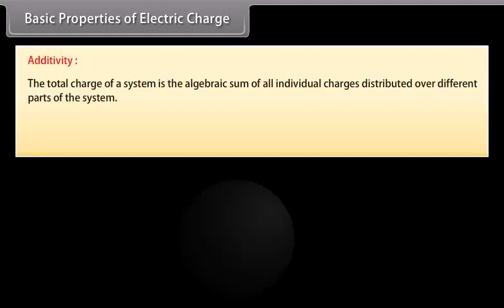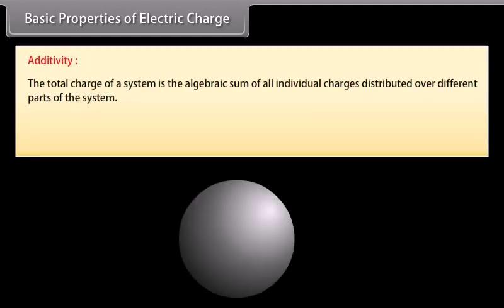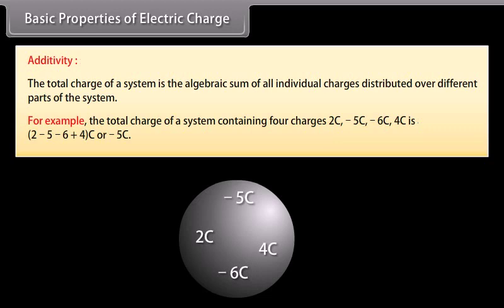Basic properties of electric charge — Additivity: the total charge of a system is the algebraic sum of all individual charges distributed over different parts of the system. For example, the total charge of a system containing four charges: 2 coulomb, minus 5 coulomb, minus 6 coulomb, and 4 coulomb is equal to minus 5 coulomb.